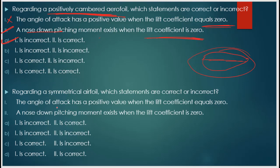Next question: regarding a symmetrical airfoil, which statements are correct or incorrect? Statement one: the angle of attack has a positive value when the lift coefficient is equal to zero. Statement two: a nose-down pitching moment exists when the lift coefficient is equal to zero. You have to read the question carefully — this is a symmetrical airfoil. For a symmetrical airfoil, both statements are incorrect. The angle of attack is not positive when CL is zero, and the nose-down pitching moment does not exist when CL is zero.